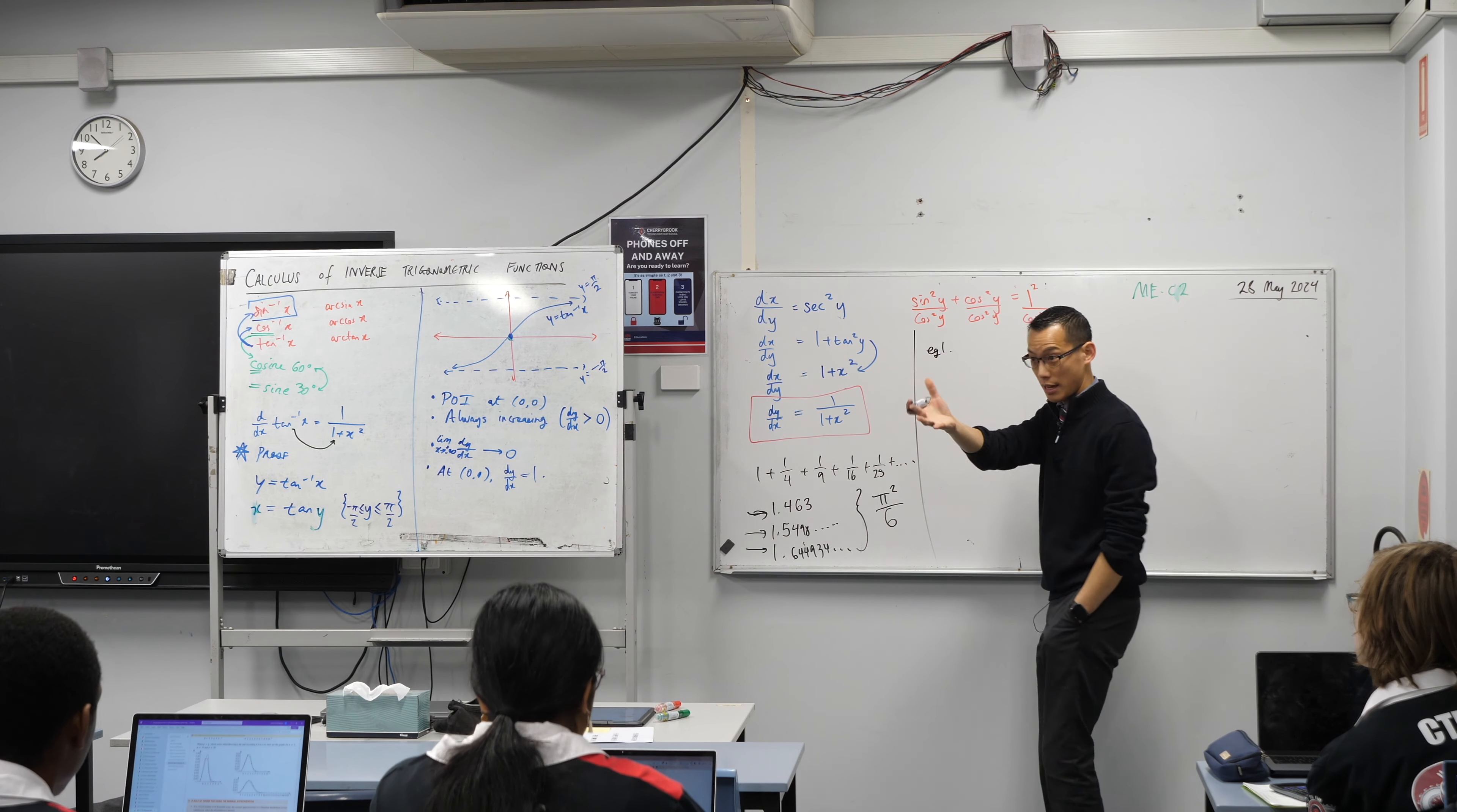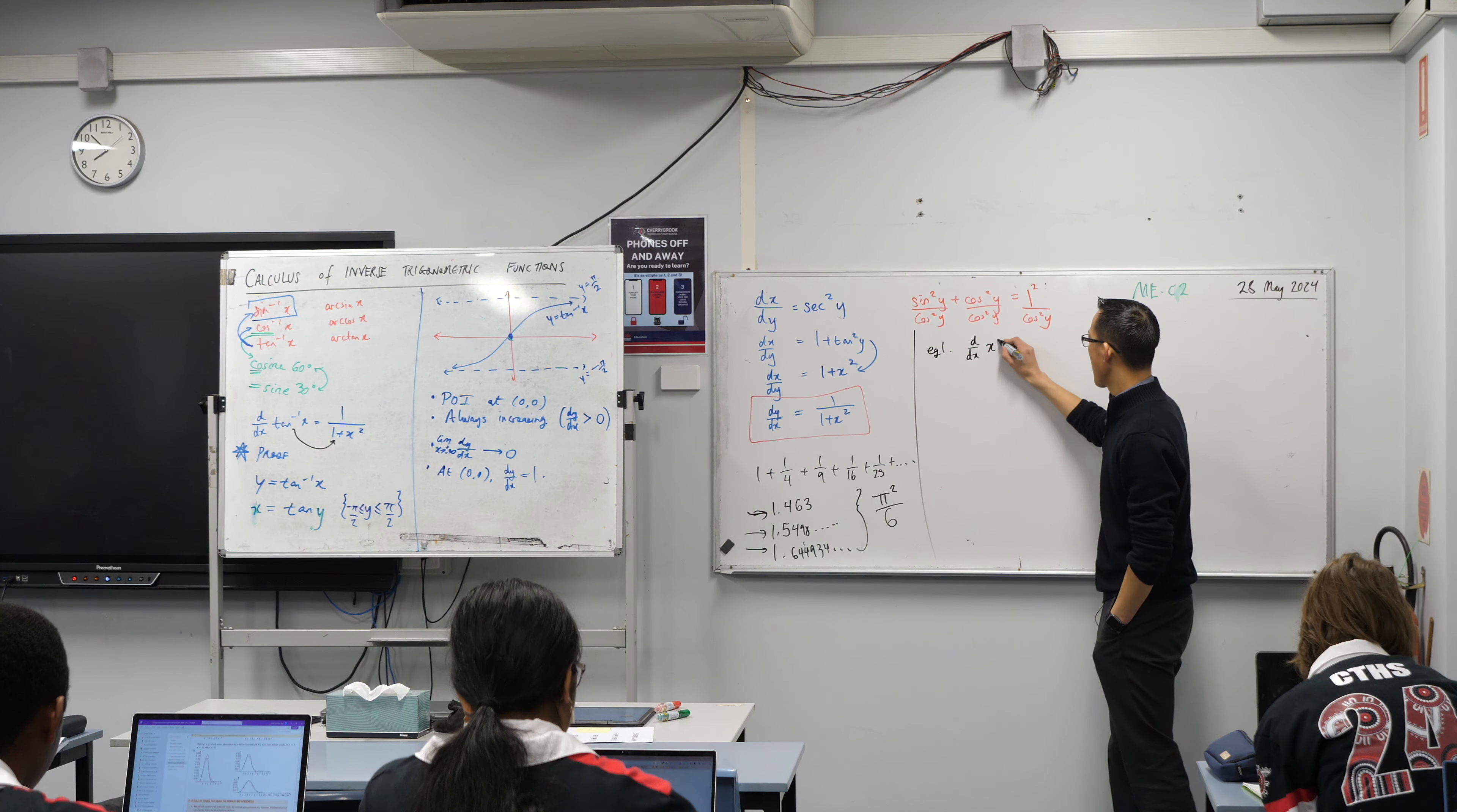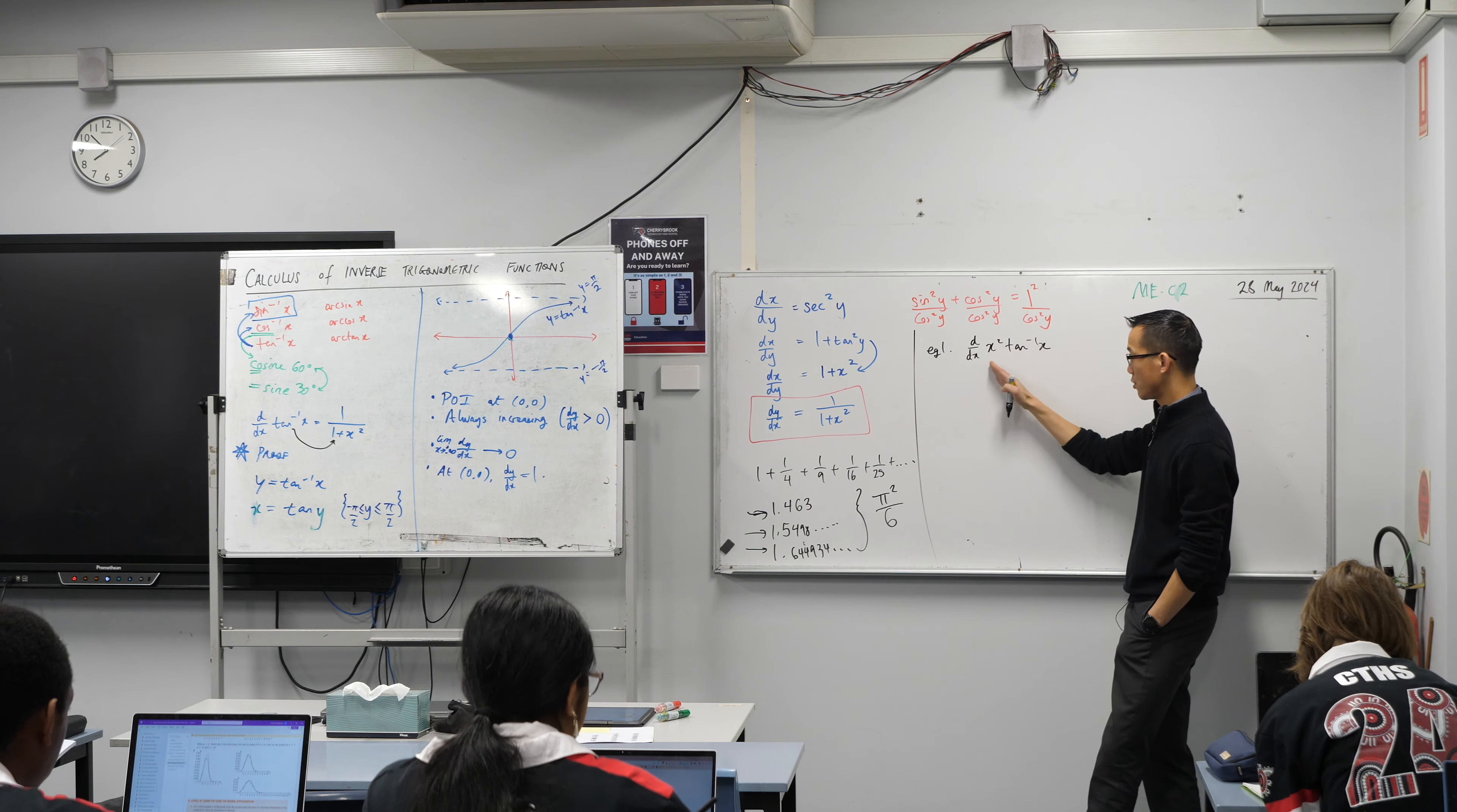So example one that I'd like you to go ahead and write down. Could you please for me differentiate x squared tan inverse of x. So this is a classic old product rule, you know what this part will be, your u and your v.